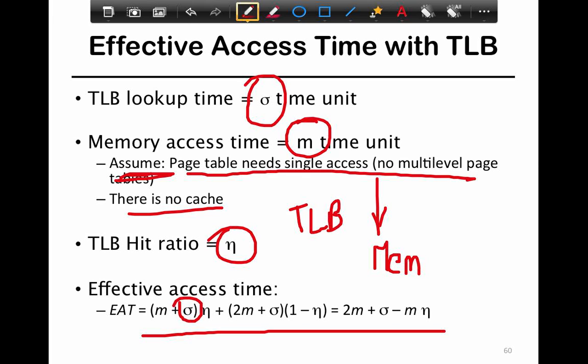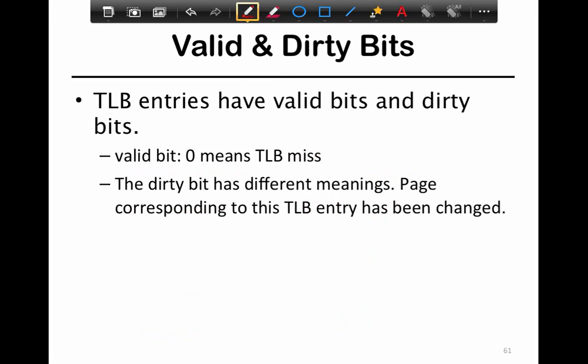The effective access time is directly proportional to how many data accesses you actually make, in this case m. TLB entries also have valid and dirty bits, similarly to a page table entry — they not only cache the translation itself but also cache the metadata. A valid bit of zero means a TLB miss, that is, the TLB entry does not exist. The dirty bit has a slightly different meaning: it corresponds to the fact that the page table entry may have been changed, and that the page table in memory is out of date with the TLB, which is caching the most up-to-date entry. In such cases, the entry from the TLB has to be flushed back to the page table.